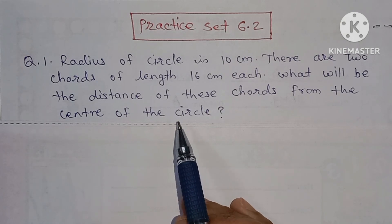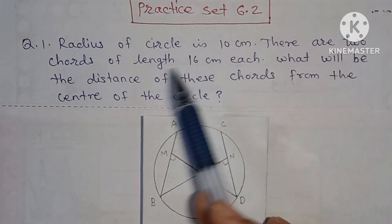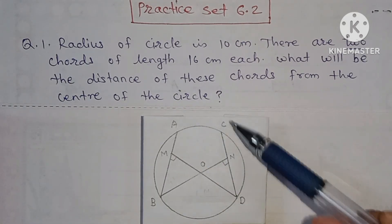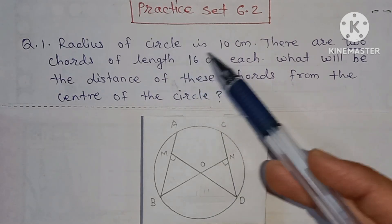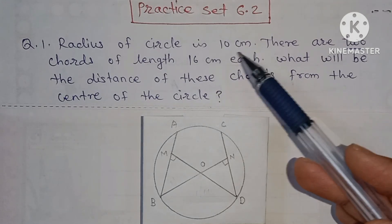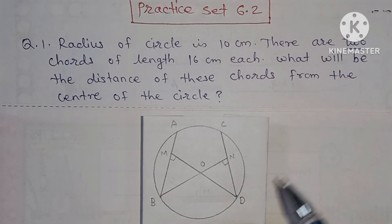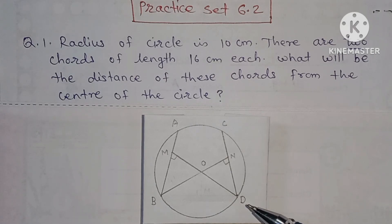A diagram is not given, so from the given information we will draw the diagram. This is a circle with center O. Two chords are given — AB and CD are the two chords, O is the center of the circle. The length of the radius OB and OD is 10 centimeters, and the length of each chord AB and CD is 16 centimeters.